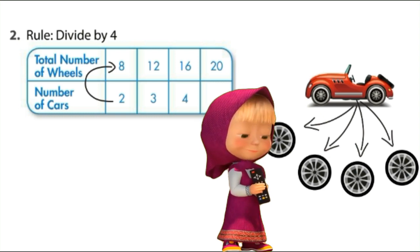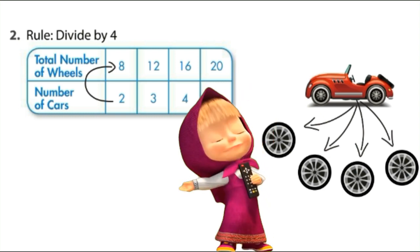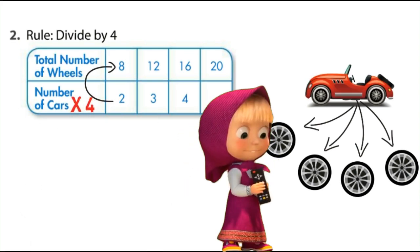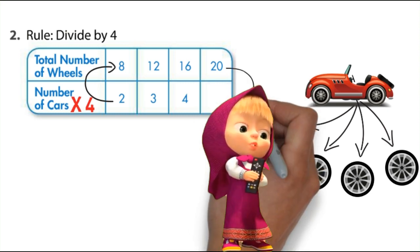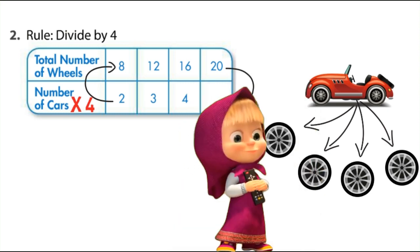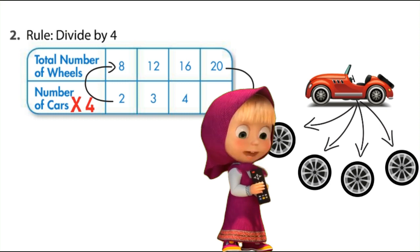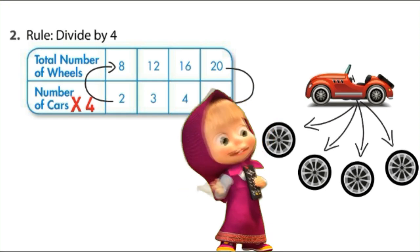Two multiplied by four, so it's gonna be eight, excellent. So we are multiplying by four every time. Two multiplied by four equals eight, three multiplied by four equals 12, four multiplied by four equals 16.